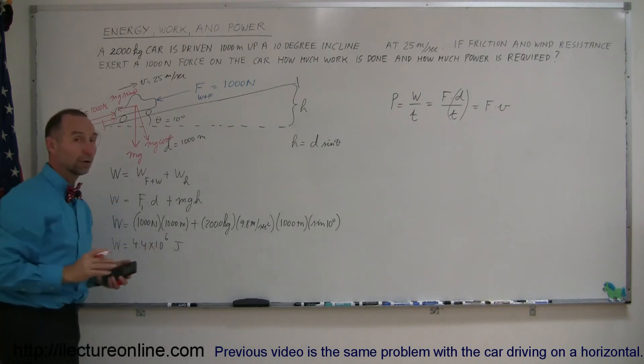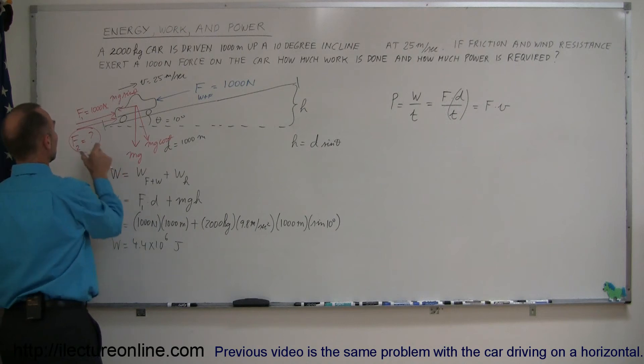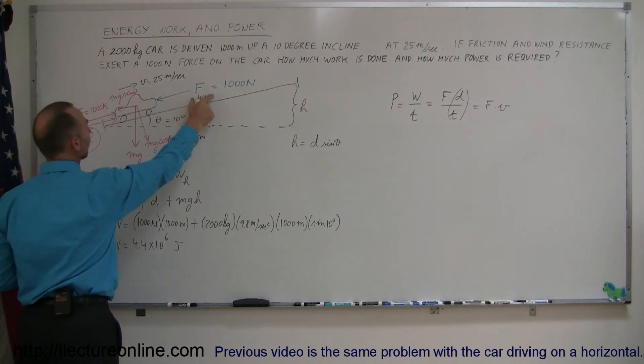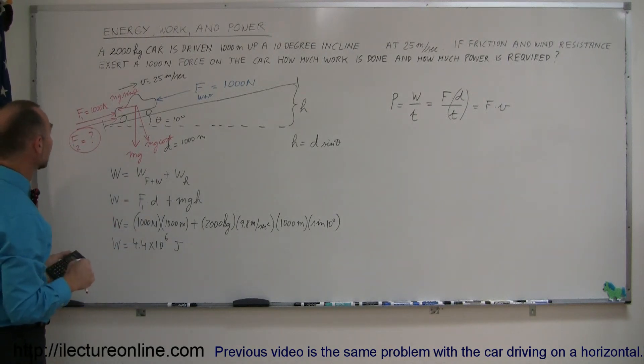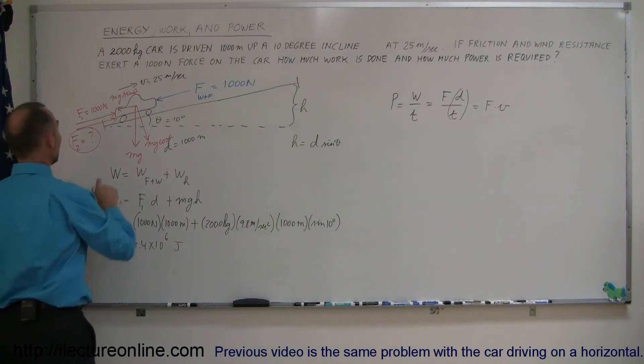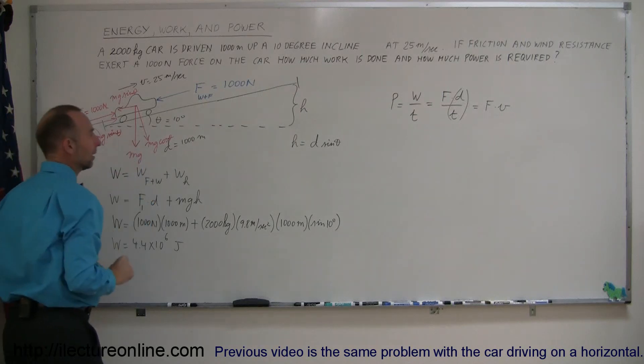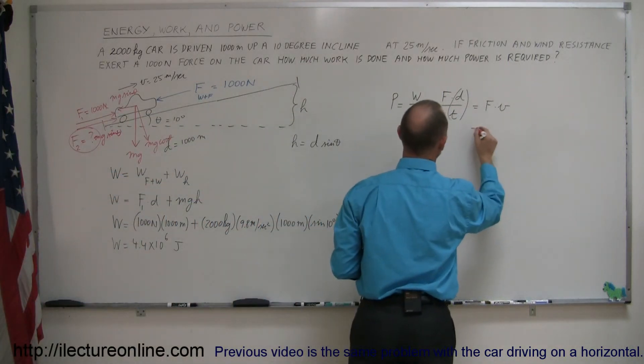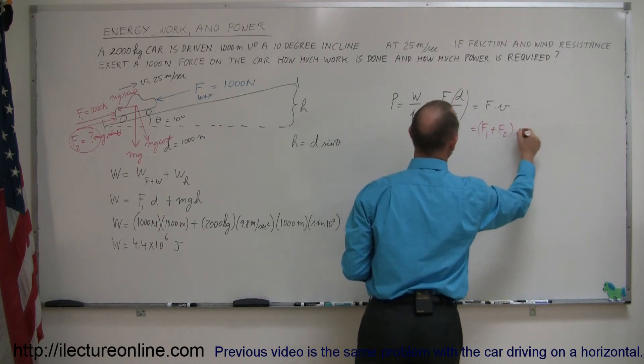And so, in order for the car to be driven up the incline with the power of the engine, it needs to not only apply a force to overcome the force of the wind and the friction, it needs to apply a force to also overcome the weight of the car, the component of the weight that acts downward along the incline, parallel to the incline. So this force has to be mg sine theta. The force right here is going to be the sum of F1 plus F2 times velocity.